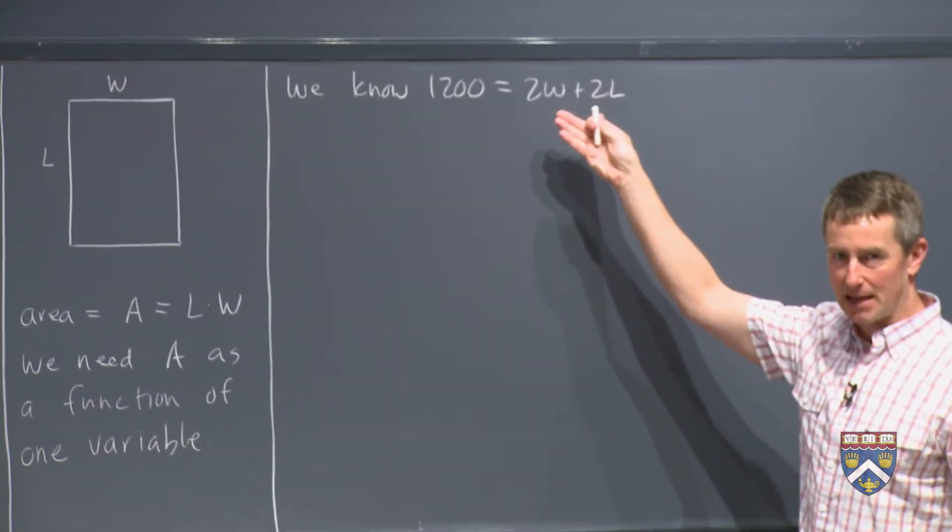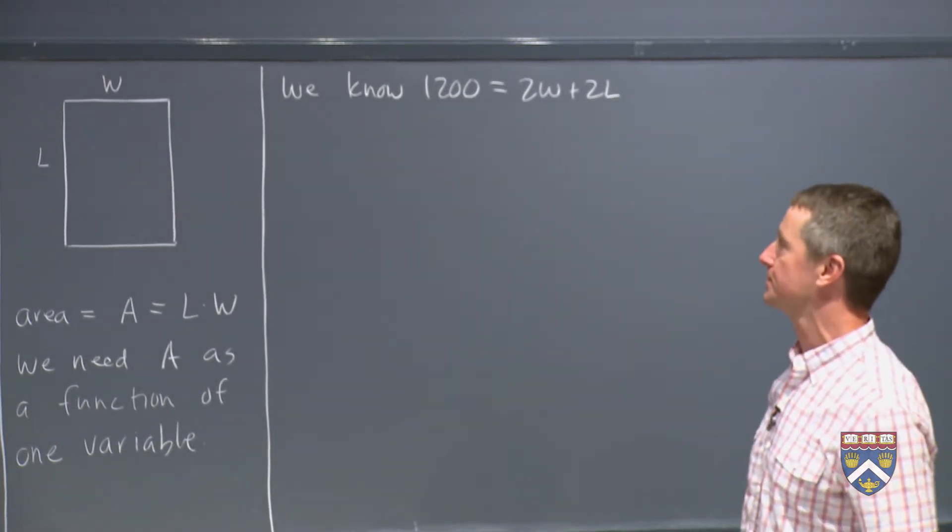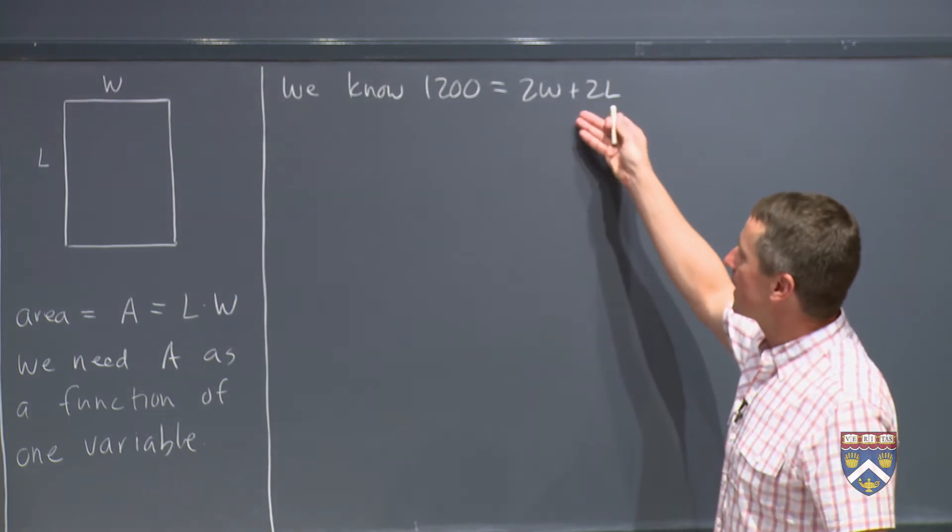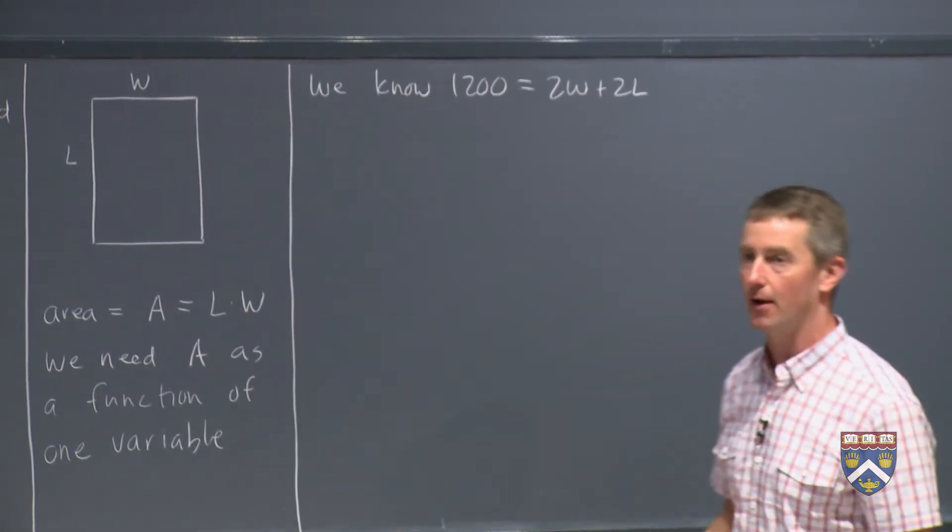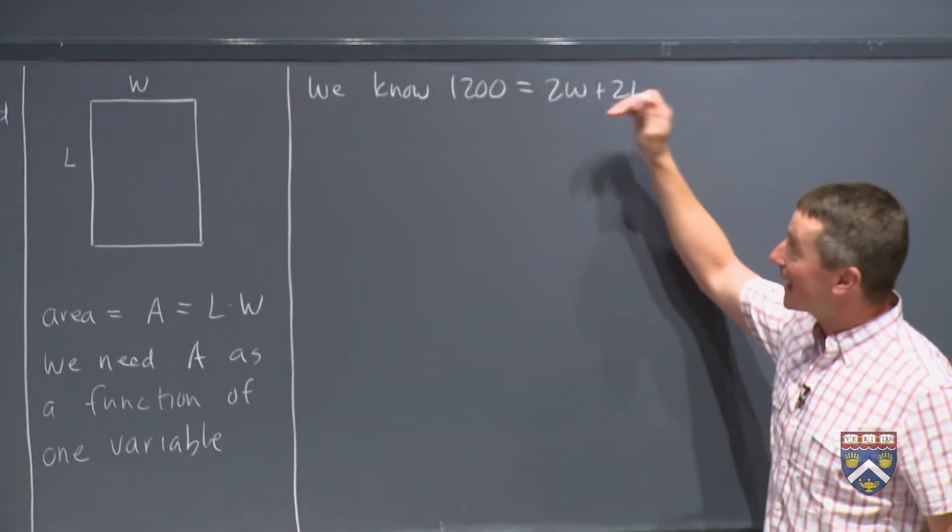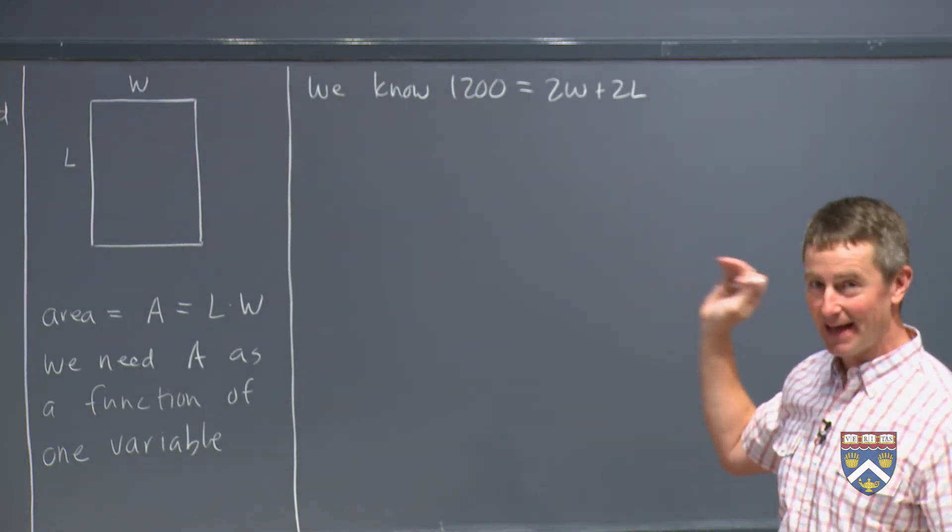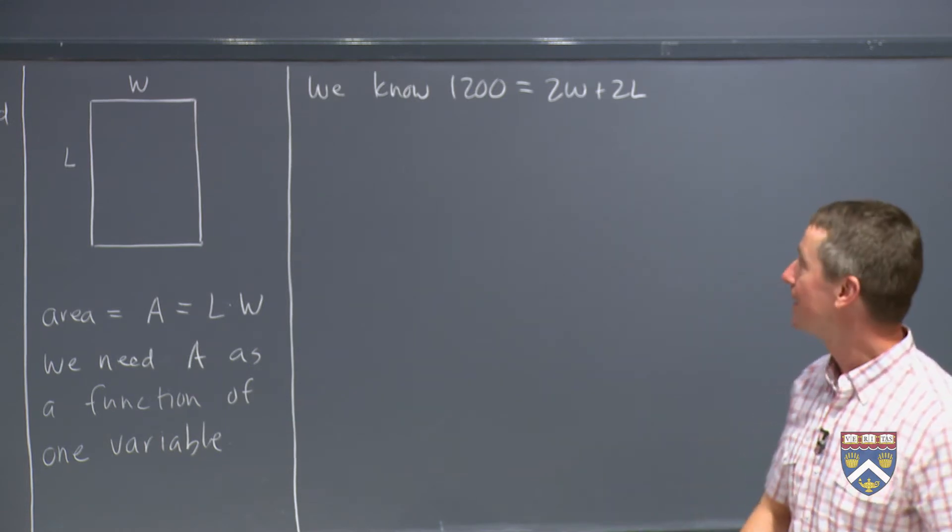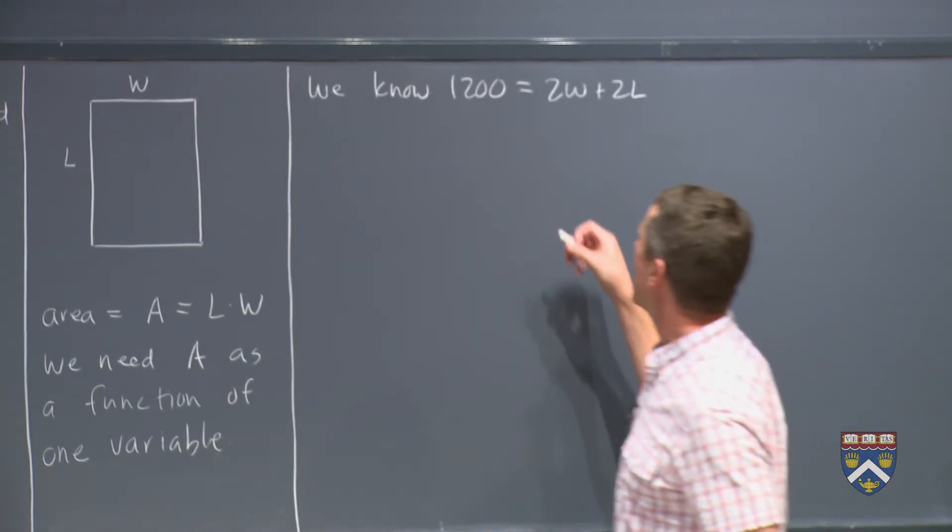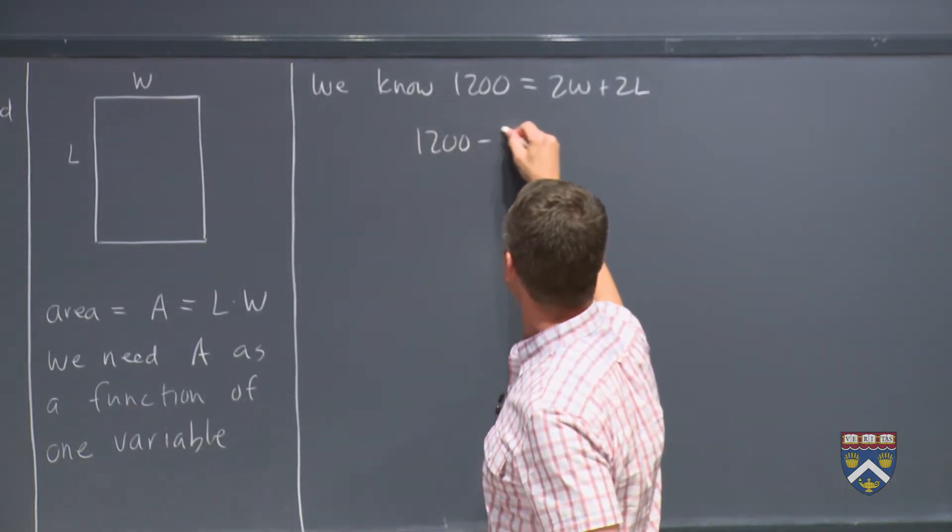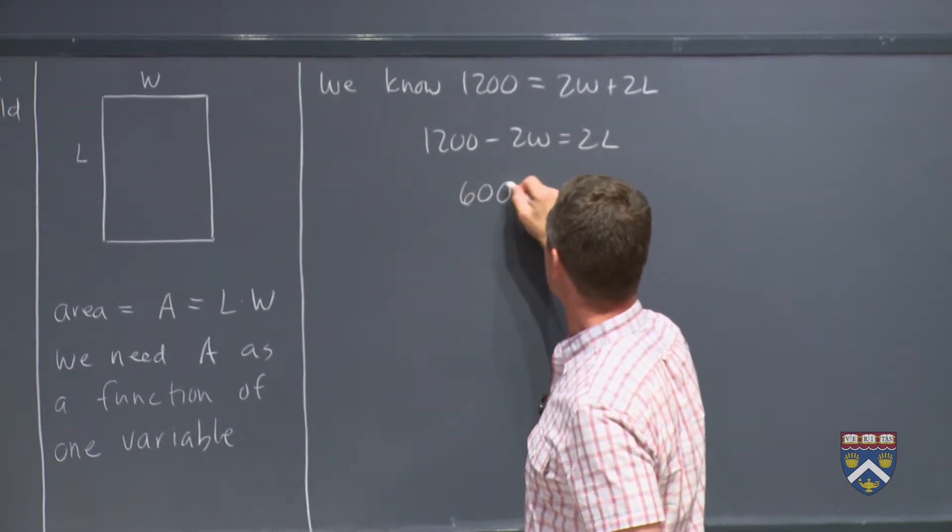So by using this, which sometimes is called the constraint, right? This is constraining you from building a pen that's as big as you want. You only have 1200 meters of fence. This constraint will let us solve for one of these variables. We'll solve for one and then stick it back into here. And then we'll have A as a function of just one variable. In almost every case it will be easier to solve for one variable than the other here. And you should spend 15 seconds deciding that now to save yourself five minutes of trouble later. In this case everything is perfectly symmetrical. It doesn't matter which variable we solve for. I'm going to solve for L. So I'm going to get 1200 minus 2W equals 2L. So L is 600 minus W.